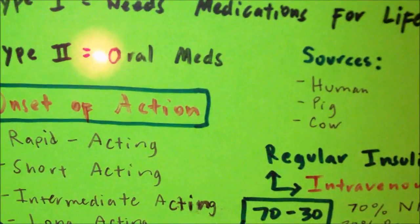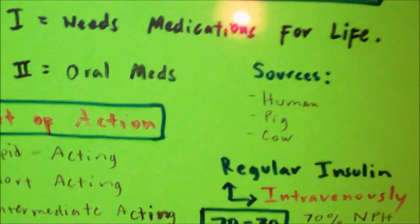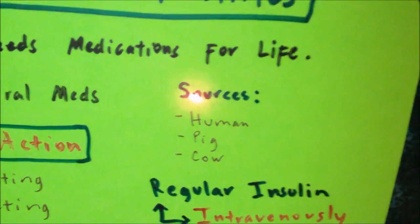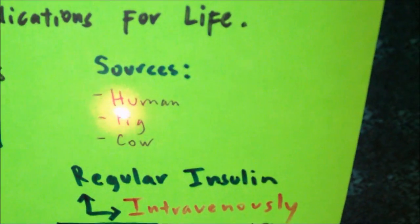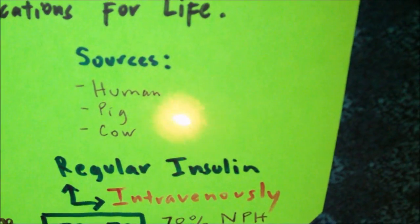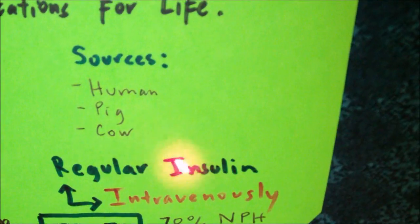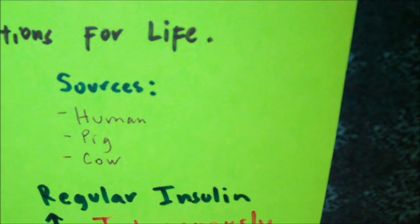Now let's talk about insulin. Insulin could have three sources: it could be from humans, it could be from a pig, or it could be from a cow.